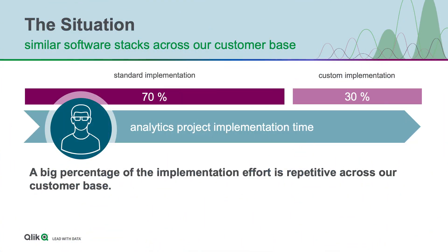A deeper comprehension of how SAP works helps users understand the value behind the Google Cloud Cortex Framework and Qlik solution accelerators for SAP. SAP ERP implementations vary across customers, and there are many business baseline modules such as AP, AR, FICO, SD, MM, etc. What we find is 70% of the content in these SAP implementations is standard reusable content, with the remaining 30% being custom content that's been modified for each customer.